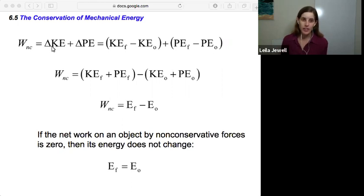And we can write out those changes in energy, those deltas, as KE final minus KE initial. Delta always corresponds to final minus initial. Same thing with potential energy. Final potential energy minus initial potential energy.